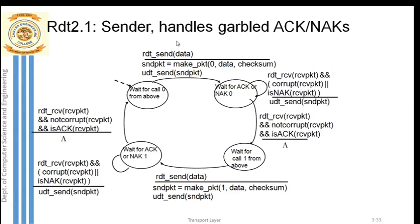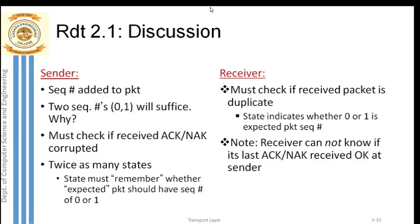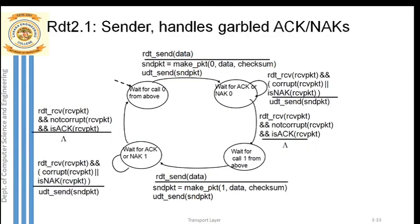This is how the RDT 2.1 sender works. Garbled acknowledgements are handled, and duplicate packets are also handled through the concept of sequence numbers introduced by the sender. Remember: in RDT 2.1, garbled acknowledgement is handled. Now we will move on to the RDT 2.1 receiver. In all these versions, both sender and receiver must be discussed. The sender side is done; now we will see what the receiver does in RDT 2.1.